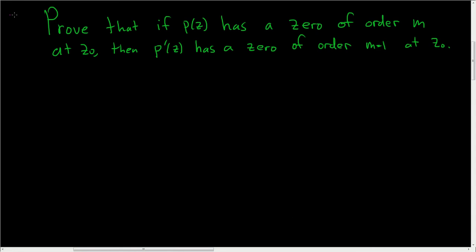Prove that if p of z has a zero of order m at z naught, then the derivative has a zero of order m minus 1 at z naught.